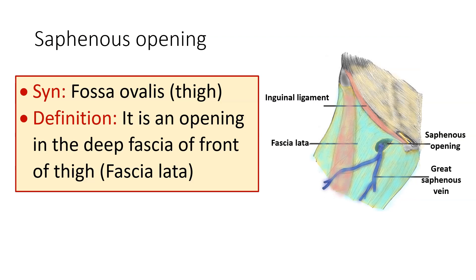The saphenous opening is also known as the fossa ovalis, and it is an opening seen on the front of the thigh — an opening in the deep fascia of the thigh, known as the fascia lata. In this picture, you can see the inguinal ligament extending from the anterior superior iliac spine to the pubic tubercle, which forms the boundary between the abdomen and the thigh. You can see a roughly oval, vertically placed opening in the fascia lata — that is the saphenous opening — covered by the cribriform fascia, with the great saphenous vein entering through it.